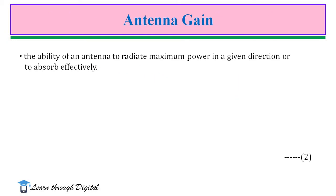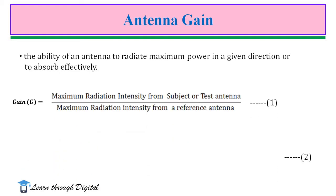Gain of an antenna is a basic property. It is frequently used as a figure of merit. Gain is closely associated with the directivity of an antenna, and the directivity entirely depends upon the shape of the radiation pattern of an antenna. Antenna gain is defined as the ratio of maximum radiation intensity from the subject or test antenna to the maximum radiation intensity from a reference antenna.